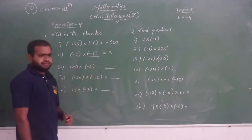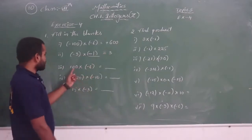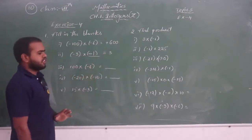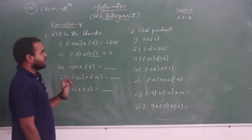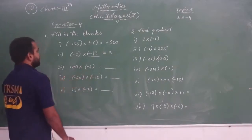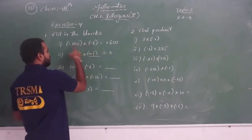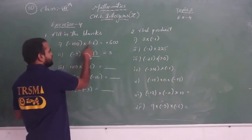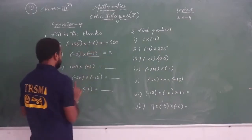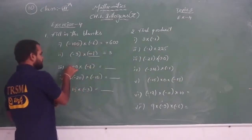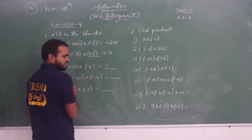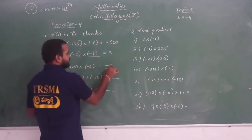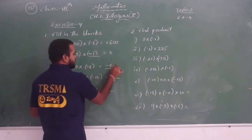Now see the third one: 100 into minus 6. Here, in the first question we had minus into minus which gives plus. But here, no sign means plus, so plus into minus is nothing but minus. 100 into 6 is 600, so the answer is minus 600.